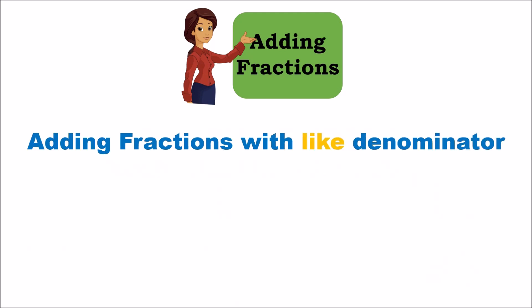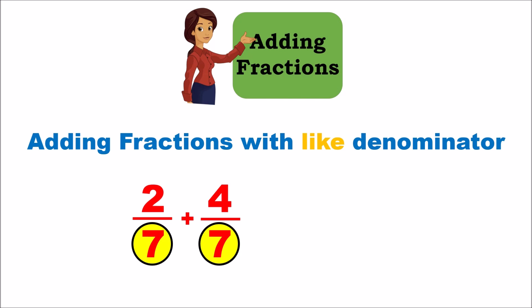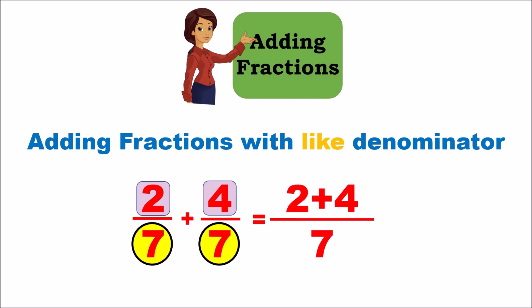Now let's see how to add fractions with like denominators. If you have two fractions and you're adding them and the number at the bottom is the same, we have 2 by 7 and 4 by 7 — both have 7 as the denominator. The way you add fractions with the same denominator is: add the numerators straight away and just carry the denominator as it is. So it's 2 plus 4 over 7, which gives 6 by 7.